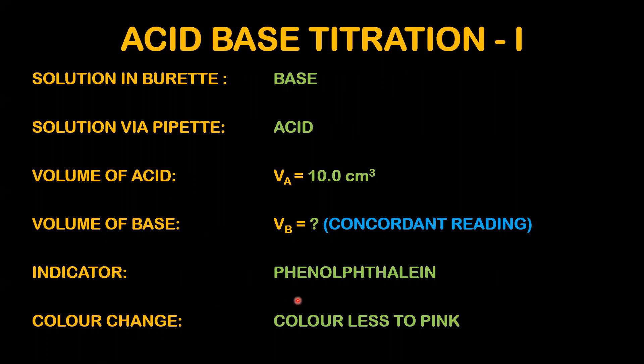When phenolphthalein is used as an indicator, the burette is filled with the base and the solution taken by pipette into the conical flask is the acid. For titration, there are two standard solutions: one in the burette and the other in the pipette. In acid-base titration, whether you use acid or base in the burette is related to the indicator.